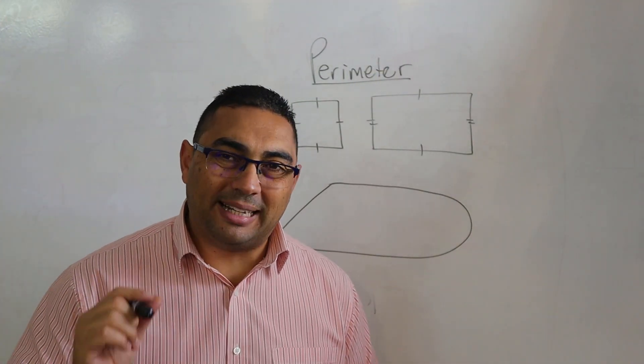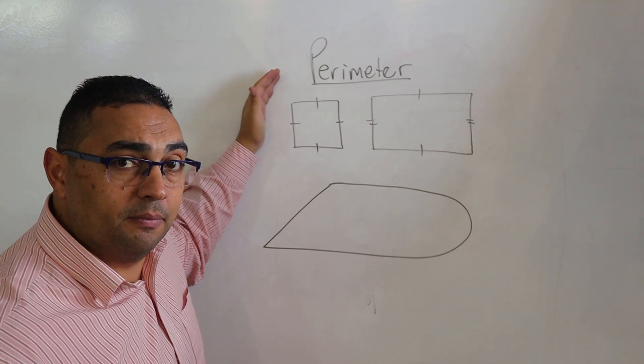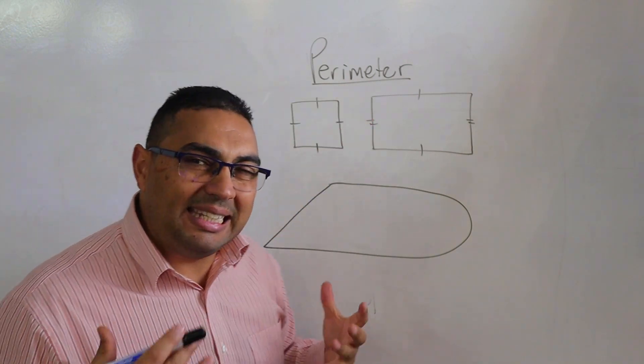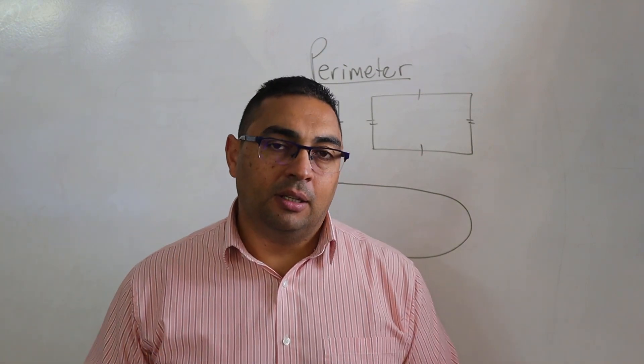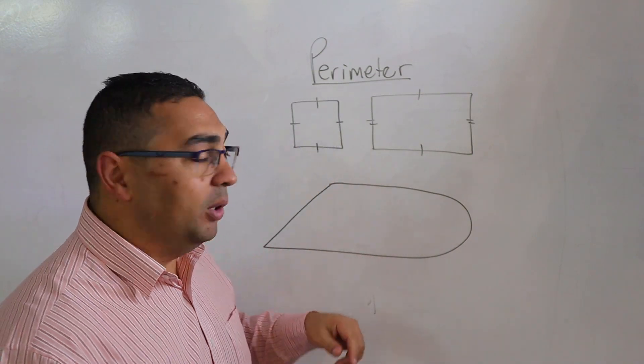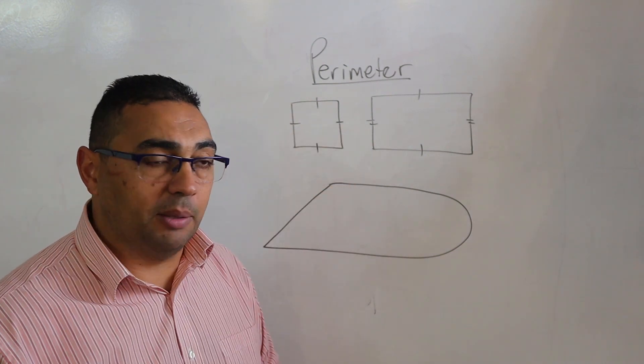Today we're talking about perimeter. Now here are a few shapes and we're going to look at the perimeter, but what is this thing called perimeter? Well, when we're talking about the perimeter, we're looking at the measurement where we calculate the outside length of the shape.